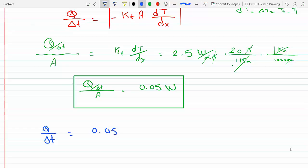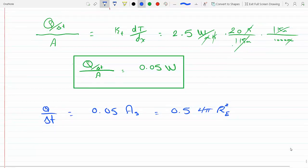And then to figure out the rate, I would have to multiply this number by the area of the earth. So the area of the sphere, which would be, assuming it's a sphere, it's 4 pi r squared, that's the radius of the earth, let's make it capital R.